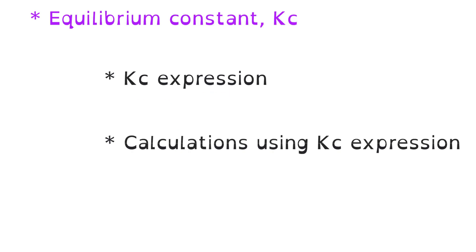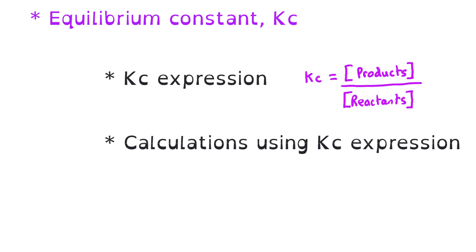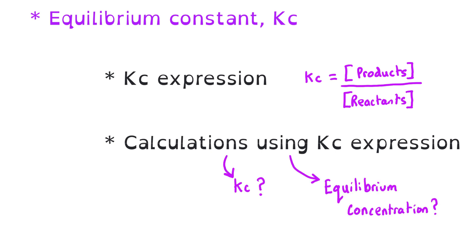There was a little bit of equilibria on Paper 1 — Le Chatelier and equilibrium moles came up — but the Kc expression could come up with high value on Paper 2, with associated calculations such as calculating an equilibrium concentration rather than necessarily a value for Kc itself.